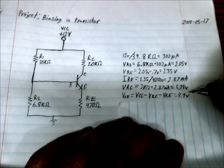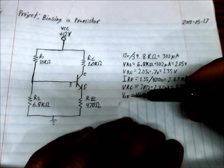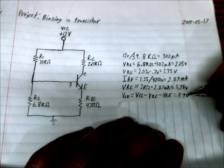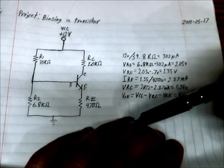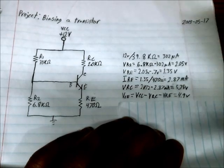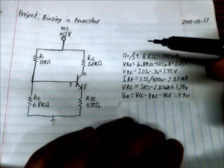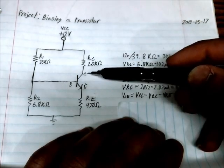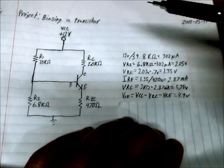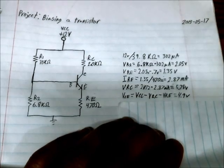And the voltage across the collector emitter junction is equal to 4.9 volts. So the transistor is biased between saturation and cutoff. If it was in cutoff the voltage would be 12 volts and if it were in saturation it would be 0 volts.